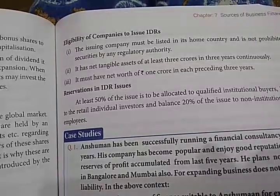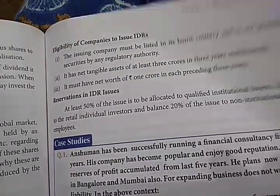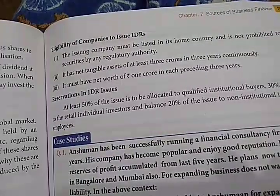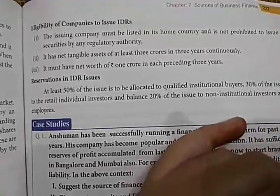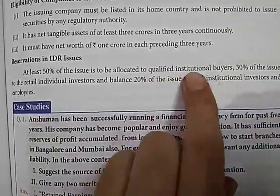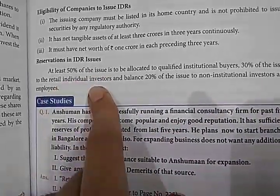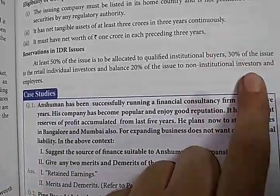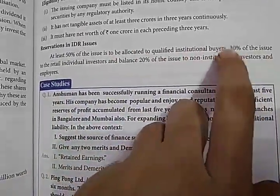Reservation in IDR issues: At least 50% of the issue is to be allocated to qualified institutional buyers (large businesses). 30% of the issue goes to retail individual investors, and the remaining 20% goes to non-institutional investors and employees, including general public and small businessmen.